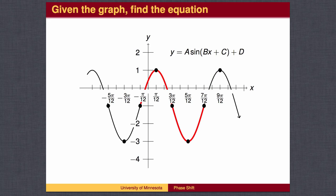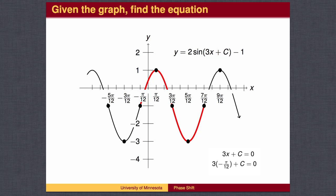Let's do this again, this time focusing on a portion of the graph that looks like a standard sine wave. The amplitude is 2, the center line is at negative 1, and the period is 8 pi over 12, so b equals 3. This time, the phase shift is negative pi over 12, so negative pi over 12 is the value for x which makes the angle 0. We solve 3 times negative pi over 12 plus c equals 0, which gives c equal to pi over 4.